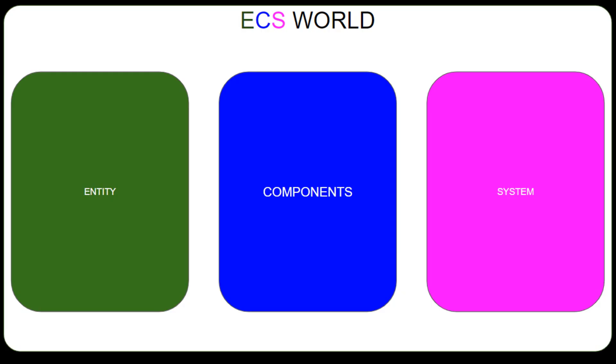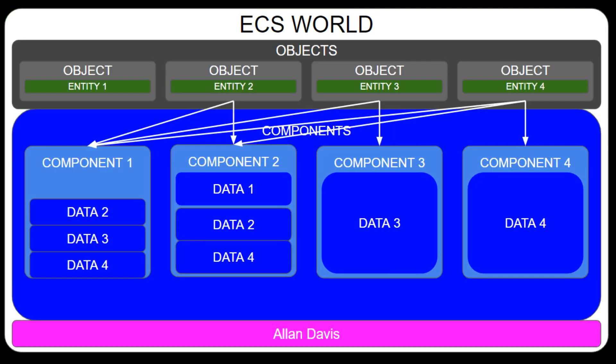By understanding the roles that entities, components, and systems play in an ECS, we can begin to see how these parts fit together to create a powerful architecture for game development. In many ECS implementations, entities are nothing more than unique identifiers that help distinguish which components belong to the same object in the game world.